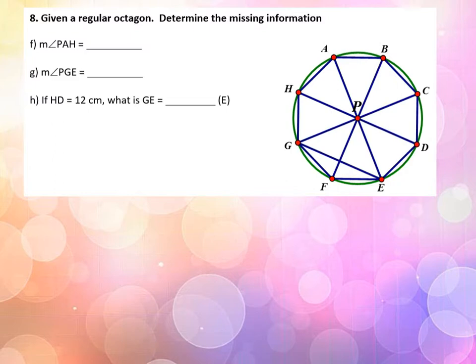And then finally, we're going to ask about HD, let's see, is 12. That's another way of saying that the radius is 6. That's a big clue here.